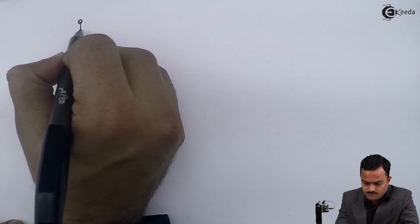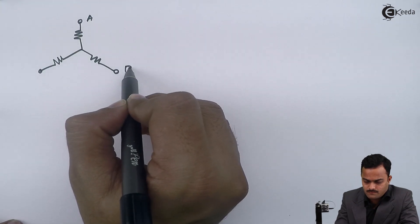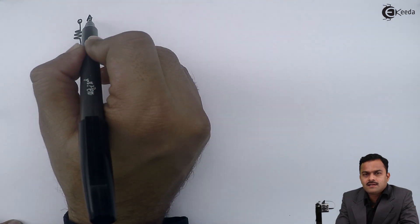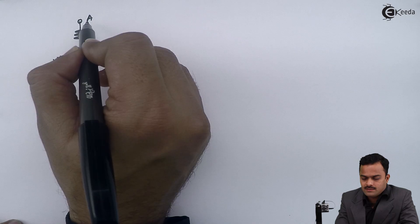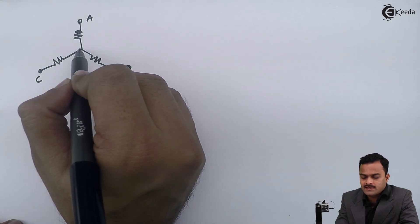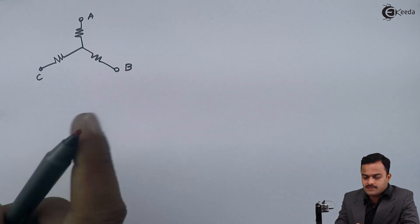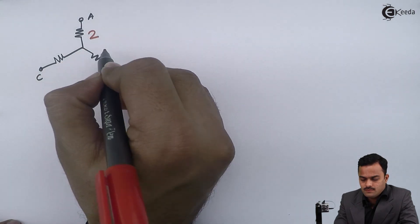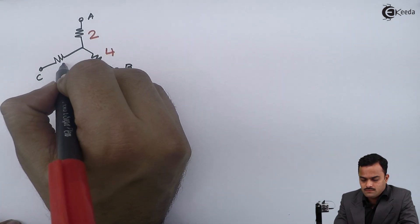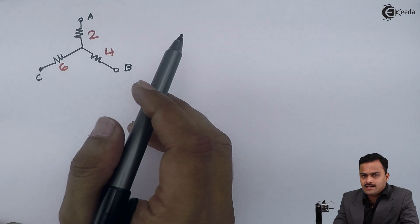Let us take a problem. I will have this particular star where three resistors are connected and one end of each resistor connected to forming a neutral point. So, definitely it is a star. The values of resistors are given 2 ohm, 4 ohm and 6 ohm. We have to find out equivalent delta for this.